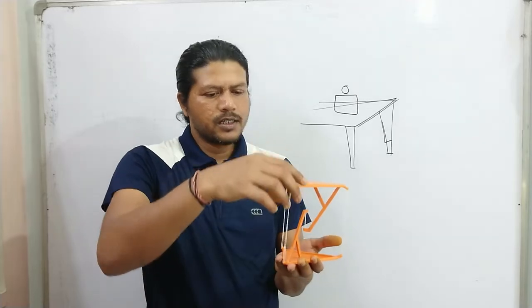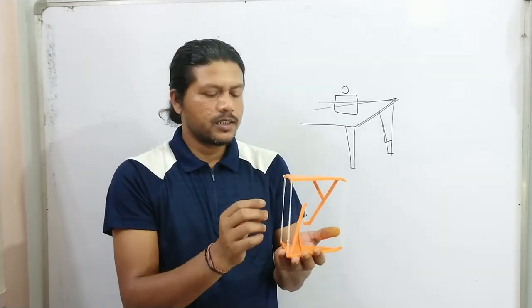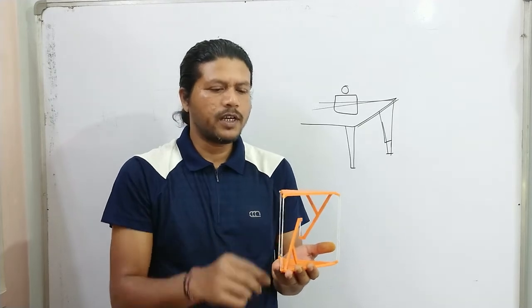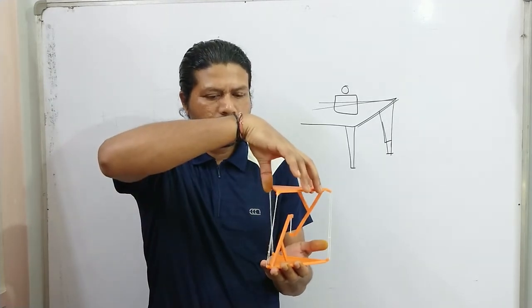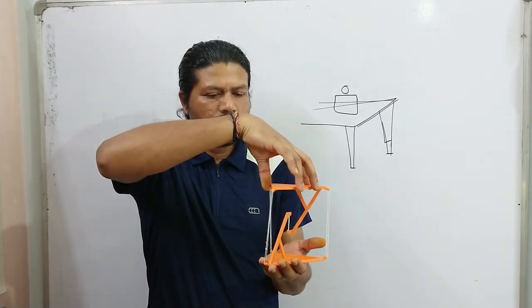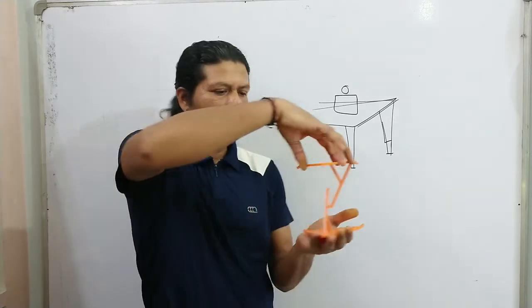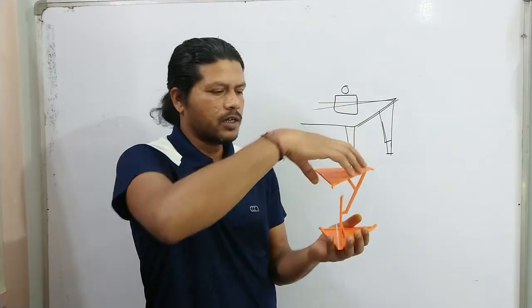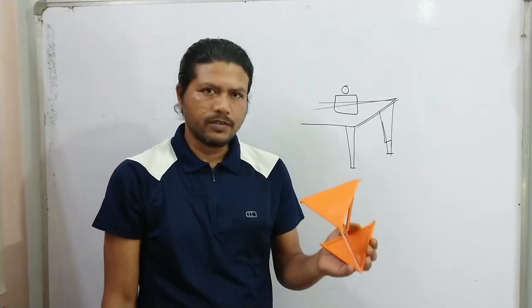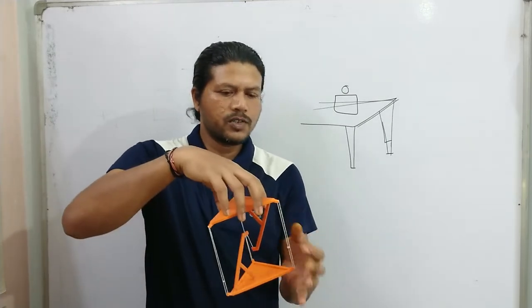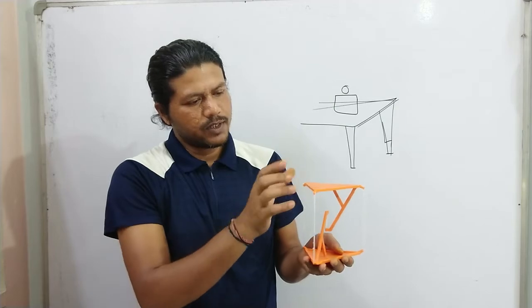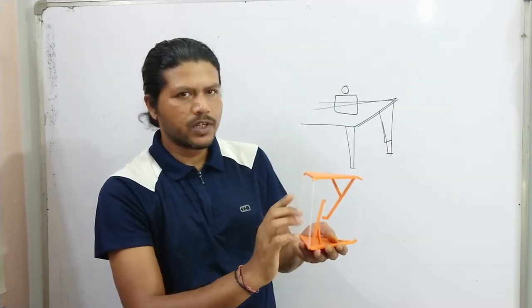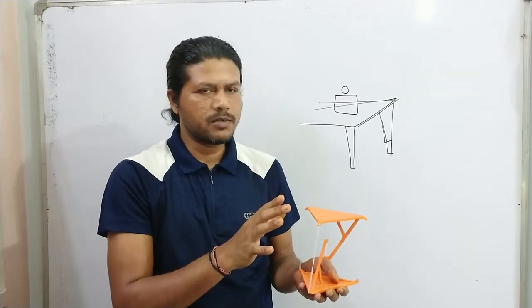Additionally, these three threads — though they do not support weight — they do have a role to play. They oppose twisting. You can see that this is quite stable, and that twisting effect is what these threads resist. If the structure tries to twist, they would have to elongate, which they can't, and therefore it becomes stable.